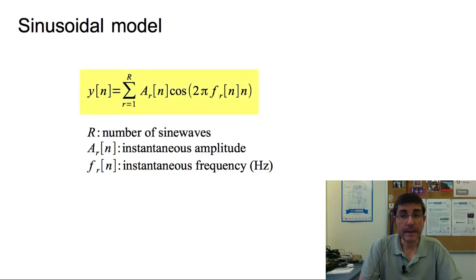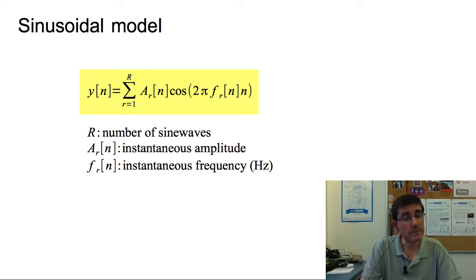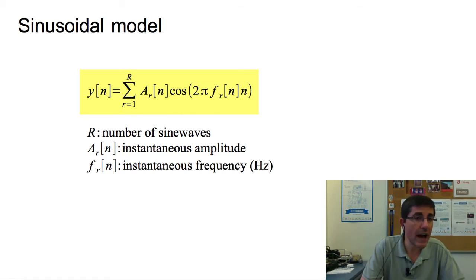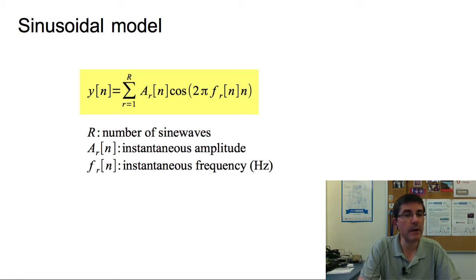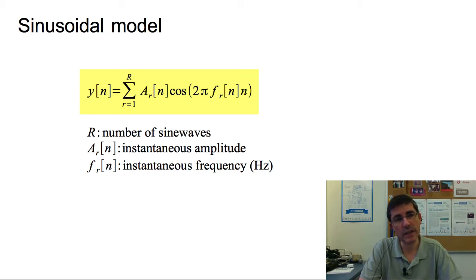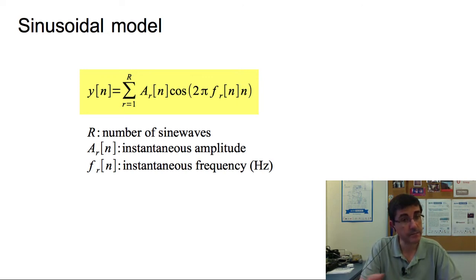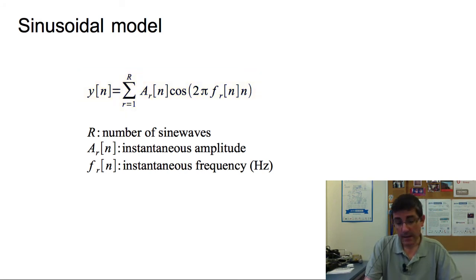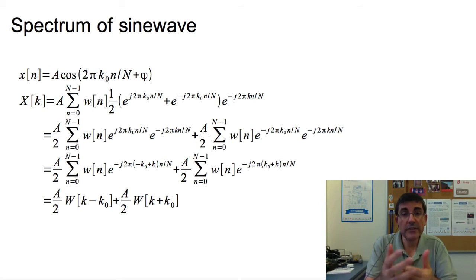The model is quite simple — it's just a sum of time-varying sinusoids. This equation we have seen before, but here we emphasize two aspects. One is the idea of summing a finite number of sinusoids, capital R. Each of these sinusoids is time-varying, having an instantaneous amplitude and a frequency value that changes as a function of the time index n. We are interested in modeling these sinusoids in the frequency domain, in the spectrum.